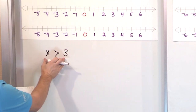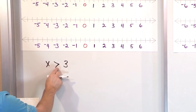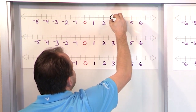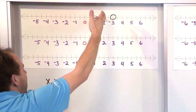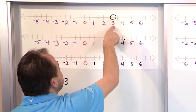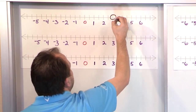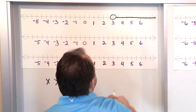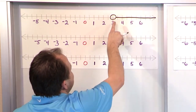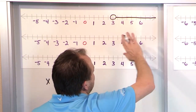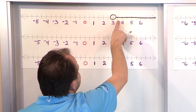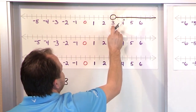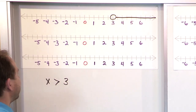To graph x greater than 3, we go to number 3 on the number line and put an open circle. The open circle means that 3 is the number we care about, but we're not including the number 3 in the solution. We shade everything to the right — everything bigger than 3: 4, 5, 6 on to infinity, and all of the numbers in between, like 3.5, 4.5, and so on. The open circle means we are not counting the number 3 in our solution.